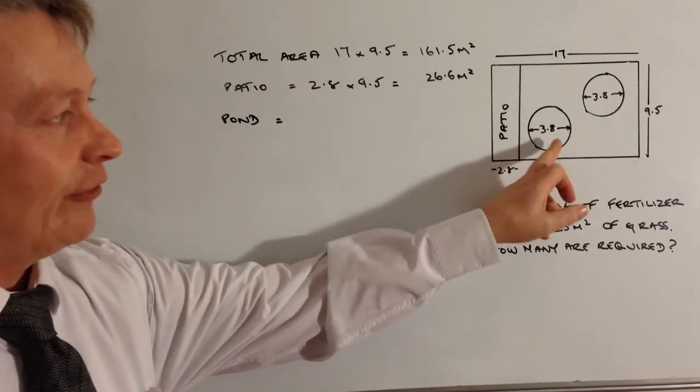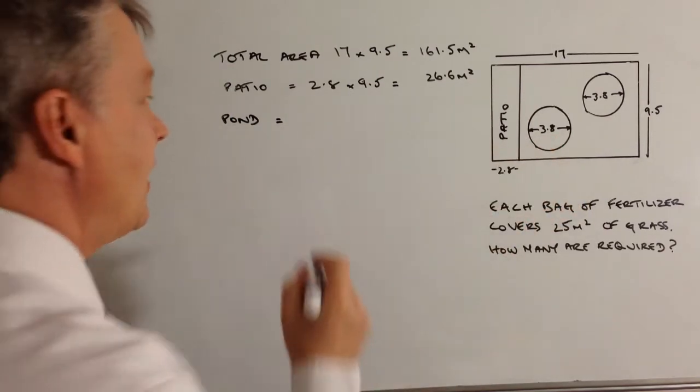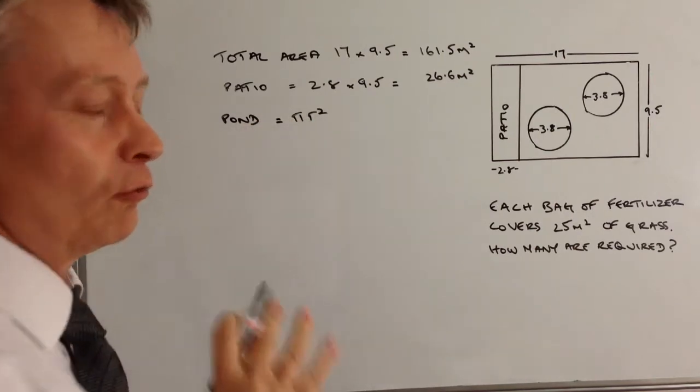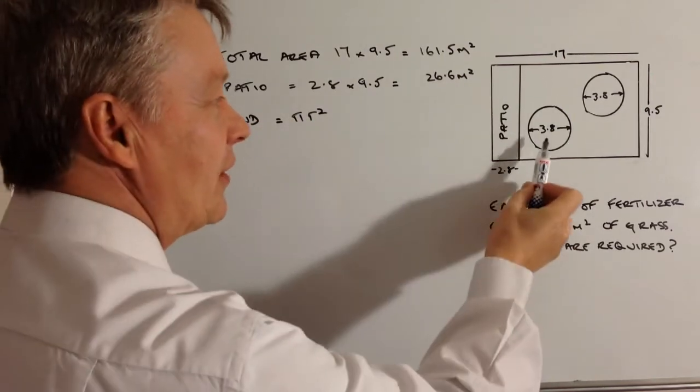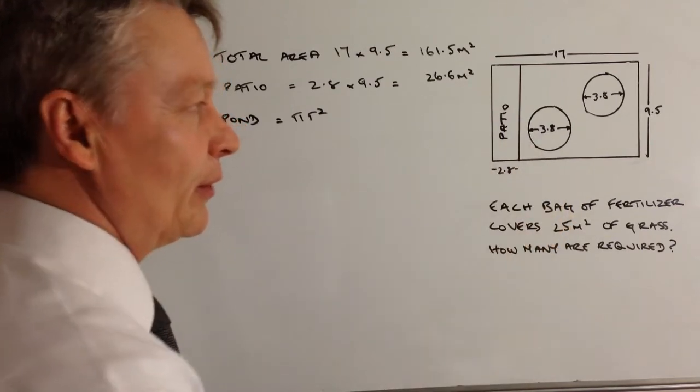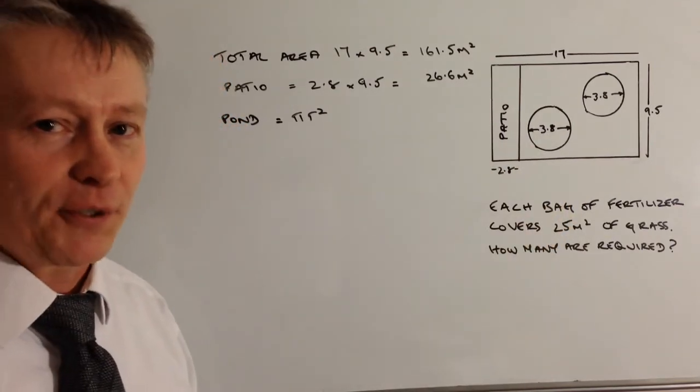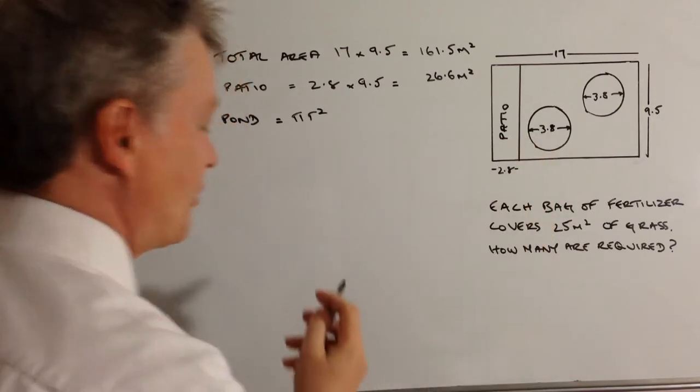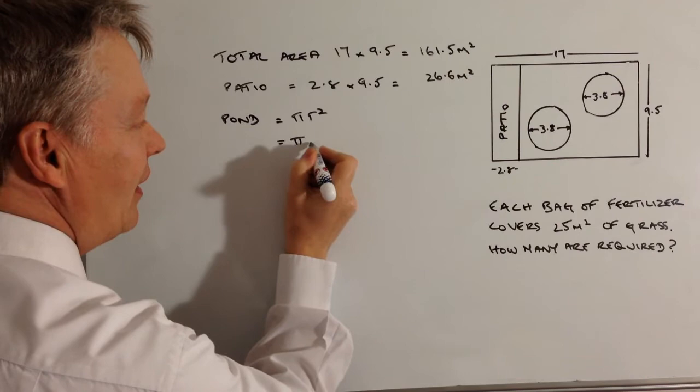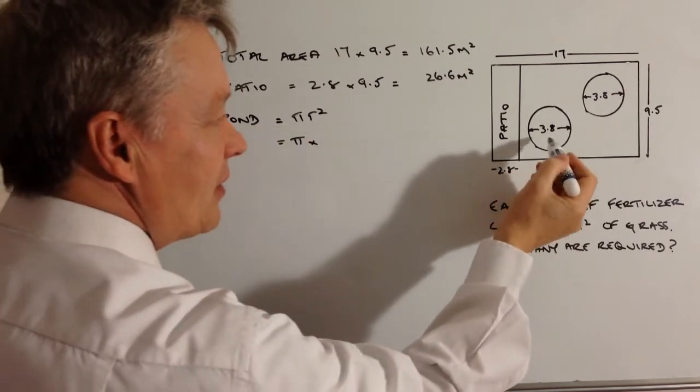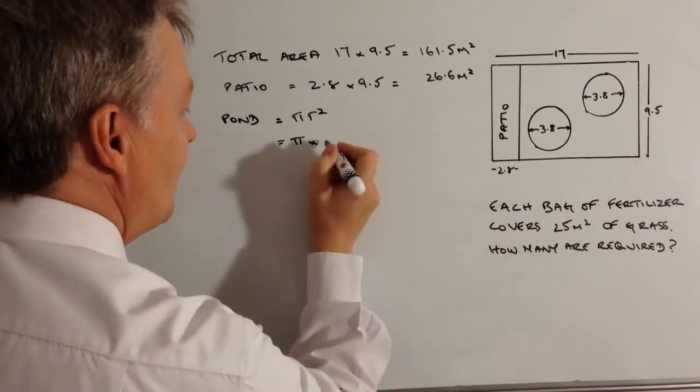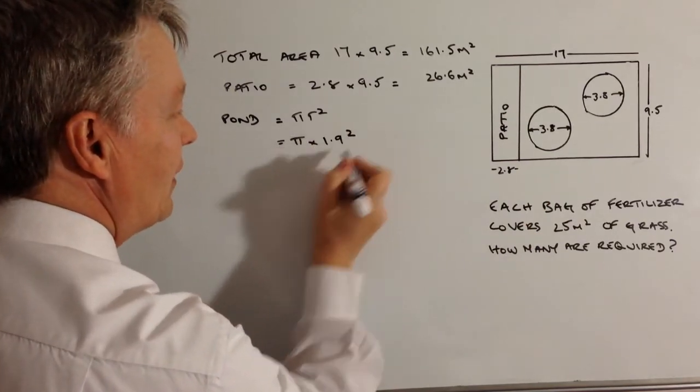The formula for working out the area of a circle is pi r squared. Well r is the radius but they've given us the diameter there of 3.8. So you've got to be very careful. It's got a bit of a favourite trick with these sorts of questions. So you actually need the radius which is pi times, now the radius is half of this, so 3.8 divided by 2 is going to be 1.9, so it's 1.9 squared.